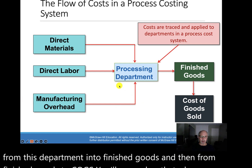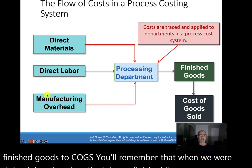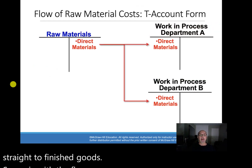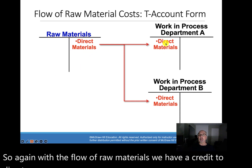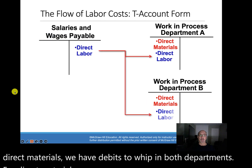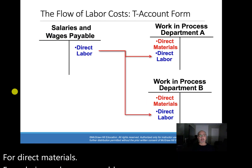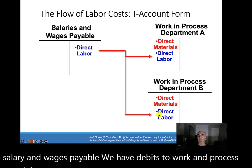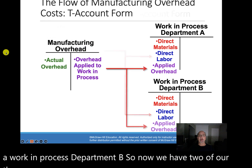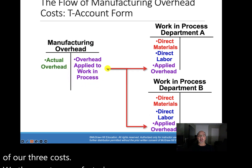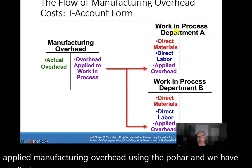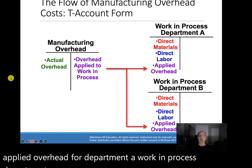You'll remember that in job order costing, when the job was finished, it went straight to finished goods. With the flow of raw materials, we have a credit to direct materials and debits to WIP in both departments. For salaries and wages payable, same thing — credit to salaries and wages payable, debits to Work in Process Department A and Work in Process Department B. We then go to manufacturing overhead and calculate applied manufacturing overhead using the POHR, with applied overhead for Department A and Department B work in process. So our costs are now complete.